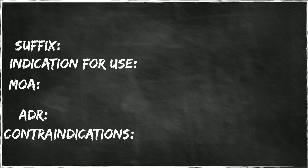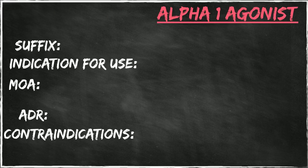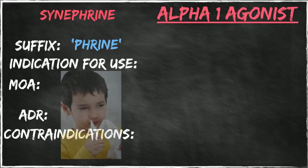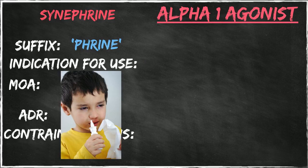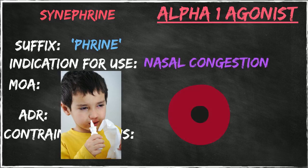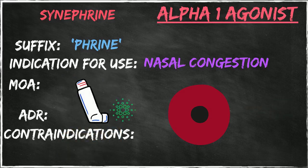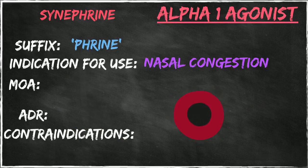Starting with the alpha-1 agonist category, the prototype drug is synephrine. A suffix of drugs commonly used in this category is -PHRINE. This drug group is primarily used to treat symptoms of upper respiratory infections, specifically nasal congestion. Nasal congestion occurs when blood vessels in the nasal passages are inflamed and swollen, leading to a constricted nasal passage for air to move through. To reduce nasal congestion, alpha-1 agonists cause vasoconstriction, which decreases the size of the blood vessels in the nostrils, allowing air to move through more easily.